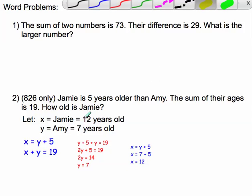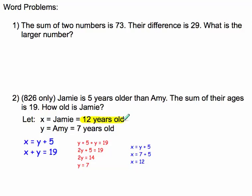But I have to make sure I just answer the problem. In this case it wants Jamie's age, which in this case is 12.